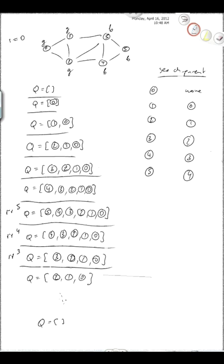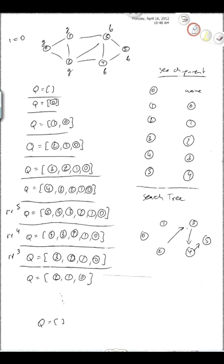Let's draw the search tree for DFS. Nodes 0 through 5: 5's parent was 4, 4's parent was 3, 3's parent was 2, 2's parent was 1, 1's parent was 0. So the search tree is a single long chain. You can see immediately that depth-first search doesn't have the shortest path property that BFS had — it gives us a path from 0 to 5 of length 5, but in the graph there was a path of length 3. So no shortest path property here.